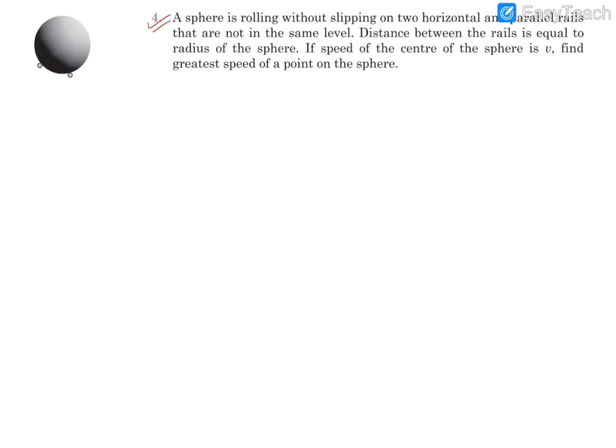Consider question number four. This is a good problem. It says there is a sphere which is rolling without slip on two horizontal and parallel rails, and they are not in the same level. The distance between these rails is equal to the radius of that sphere, and if the speed of center of the sphere is V, we need to find the greatest speed of a point on this sphere.